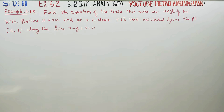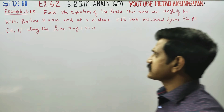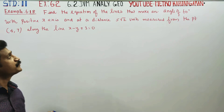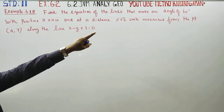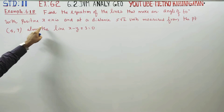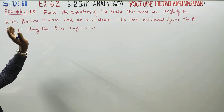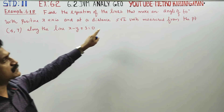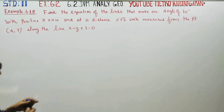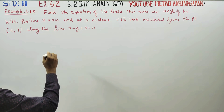Dear students, I am Etro Karanagaran. In example 6.18, find the equation of the lines that makes an angle 60 degrees with the positive x-axis, at a distance of 5 root 2 units measured from the point (4, 7) along the straight line.